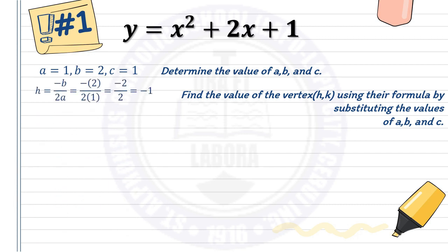Using h equals negative b over 2a, substitute the values of b and a. That gives negative 2 over 2 times 1. Negative 2 divided by 2 is negative 1. So h is negative 1.